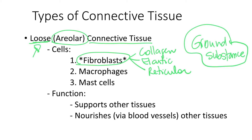Besides fibroblasts, in the loose connective tissue we find macrophages, which are the big eaters. Macrophages are the cells that will engulf pathogens that are invading that tissue. And lastly, we have the cells that get upset very easily — the cells that are key players in the inflammatory response — the famous mast cells.